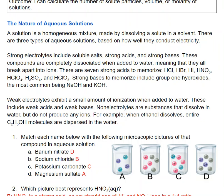Strong electrolytes include soluble salts, strong acids, and strong bases. These compounds completely dissociate when added to water. There are seven strong acids to memorize: HCl, HBr, HI, HNO3, HClO4, H2SO4, and HClO3.